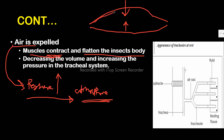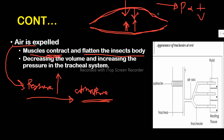The abdominal muscles contract, becoming short and stiff, and the insect's body flattens. When it flattens, the volume decreases, and since pressure and volume are inversely proportional, the pressure inside the tracheal tubes is going to increase. When pressure increases, volume decreases — that is Boyle's Law — and when volume decreases, pressure increases.